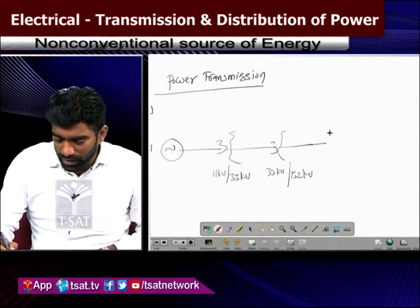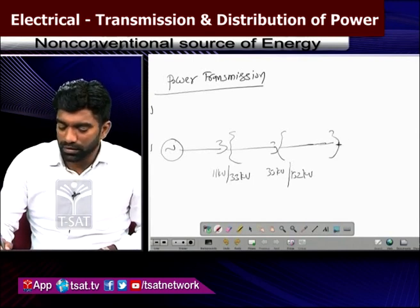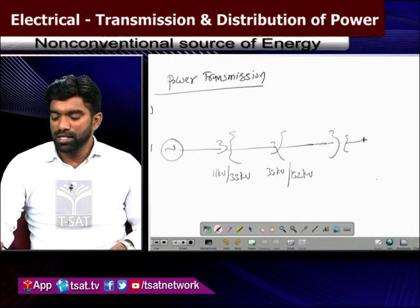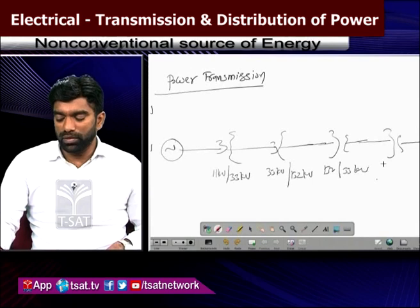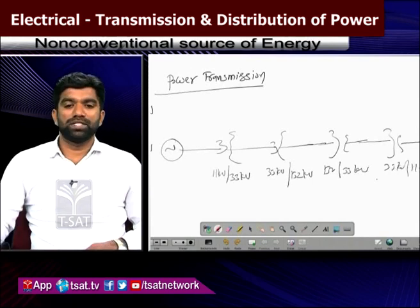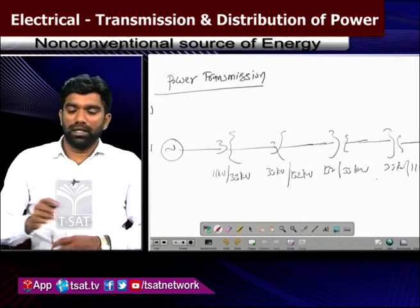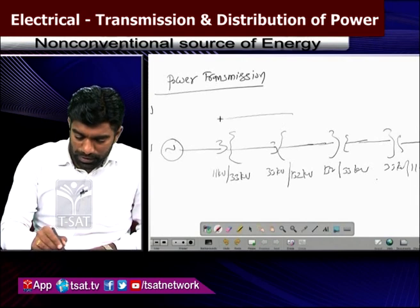Then we step down for distribution. Again 132 kV to 33 kV, again 33 kV to 11 kV, again distribution. From 11 kV to different consumers.